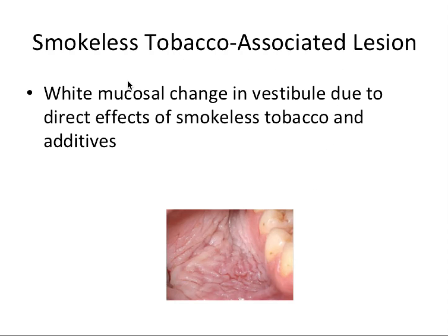Next, we have smokeless tobacco-associated lesion. It's not a mystery what's causing this — it's a white mucosal change in the vestibule due to the direct effects of smokeless tobacco and the additives found in that material. You can see a kind of wrinkly, whitish appearance. It's mostly seen in the vestibule because that's where chewing tobacco is typically held in the mouth.